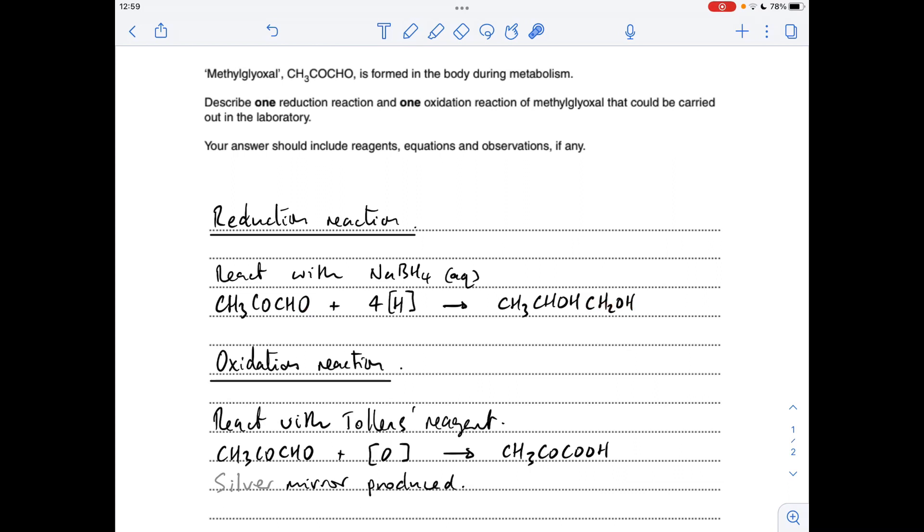Each reduction requires two moles of the reducing agent which we represent as an H in square brackets. So because there's two reductions taking place, we need four moles of reducing agent and there's no observation for that reaction.